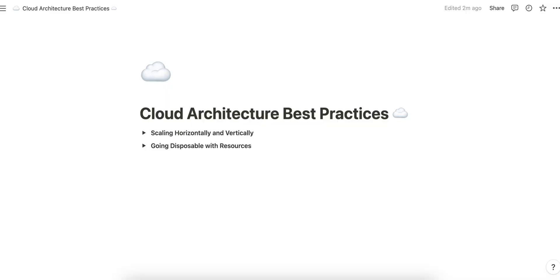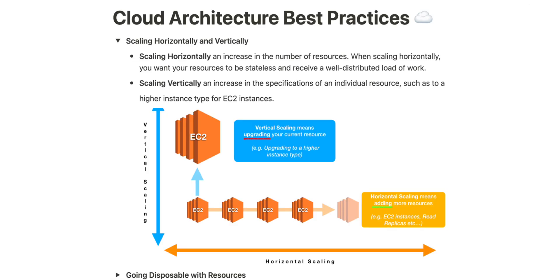Have you ever wondered how some applications handle a sudden influx of users without a hitch? That's where scalability comes into play. Think of it as a magical ability that lets your application grow effortlessly to meet user demands. Let's talk about two crucial aspects of scalability: horizontal and vertical scaling.